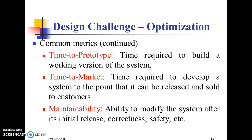Time to Prototype is the time required to build a working version of the system. Time to Market is the time required to develop a system to the point that it can be released and sold to customers. Maintainability is the ability to modify the system after its initial release, including correctness and safety.